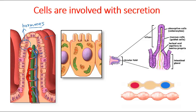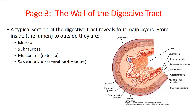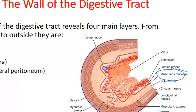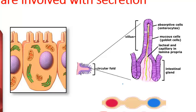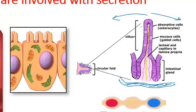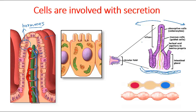The muscularis mucosa has a double-layered structure to aid digestion and absorption by moving the mucosal villi. This layer is attached to the base of the villi. With its two different tissue layers, it can move the villi in different directions and orientations. This wagging-like movement helps the villi interact with many different nutrient molecules simultaneously, so that nutrients can travel through the blood vessels and lymphatics.